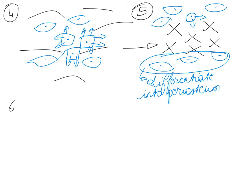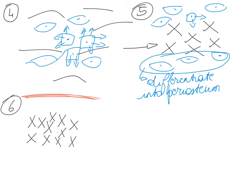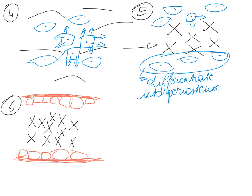We're still continuing to form our trabeculae in that primary ossification center while we now have something going on towards the periphery — we're forming our periosteum. The periosteum consists of two layers: the fibrous layer, and we're going to have osteoblasts as well as osteoclasts in the osteogenic layer that is beginning to form. So we have our trabeculae forming in the primary ossification center and we have begun to form our periosteum.